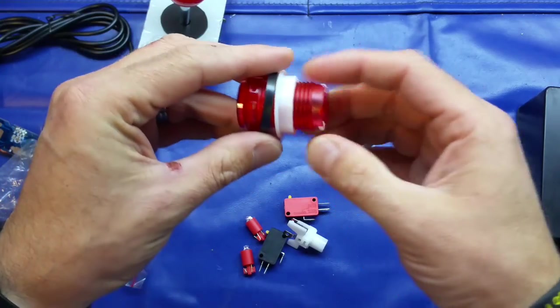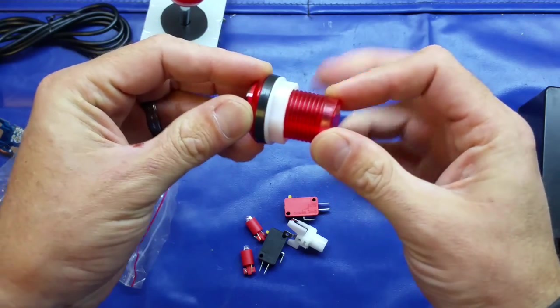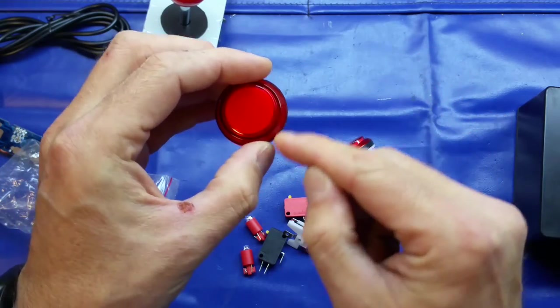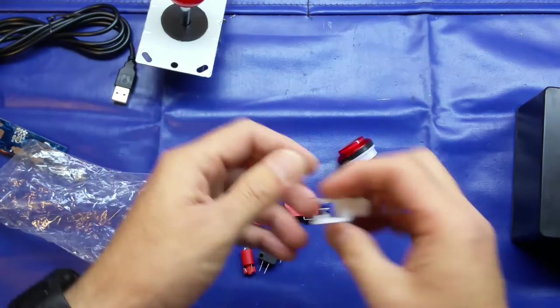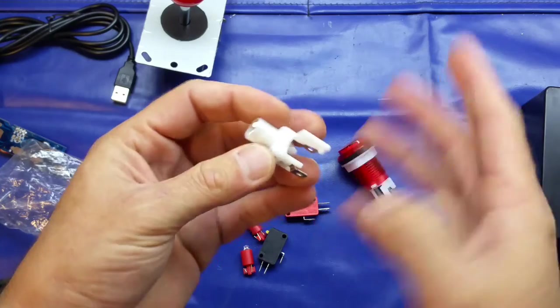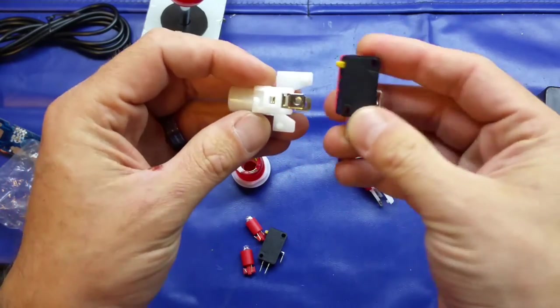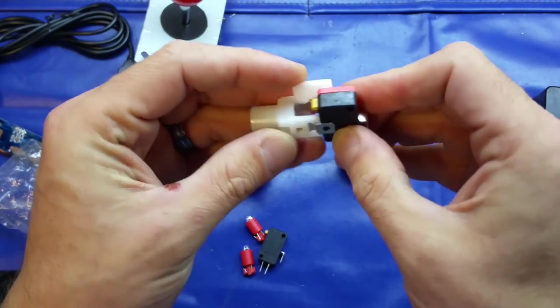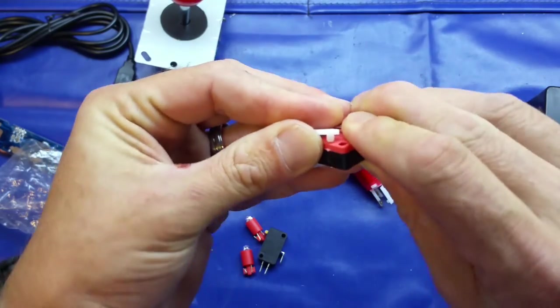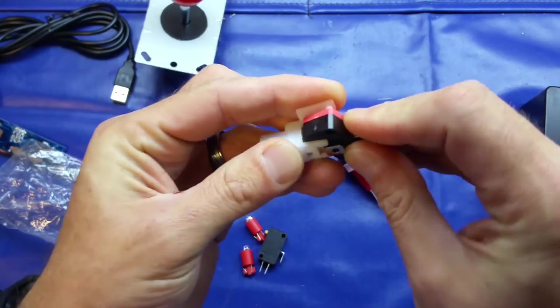We've got obviously a nylon nut, a little back plate, and basically you drill a hole, pop this through, pop the black bit on, screw it on, tighten it up. There is a little key in here as well to stop it from rotating which is nice. And then we've got the actual switch assembly itself.